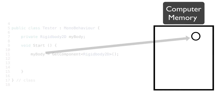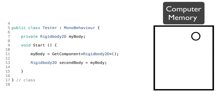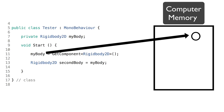If we declare a private Rigidbody2D myBody on line 11 and use GetComponent to reference it, then create a second variable secondRigidbody and set it equal to myBody, both variables are now referencing the same component — pointing at the same spot in memory.